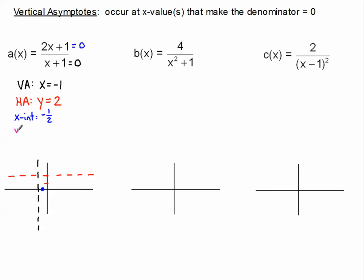And finally, our y-intercept. Y-intercepts all have one thing in common: the x-coordinate is 0. So whenever you're looking for a y-intercept, just plug a 0 in for x. 2 times 0 becomes 0, so basically that term goes away, and the only thing remaining is 1 divided by 1. So our y-intercept is 1, and we go to the y-axis and plot that point.